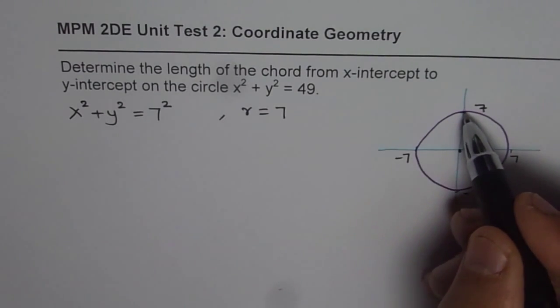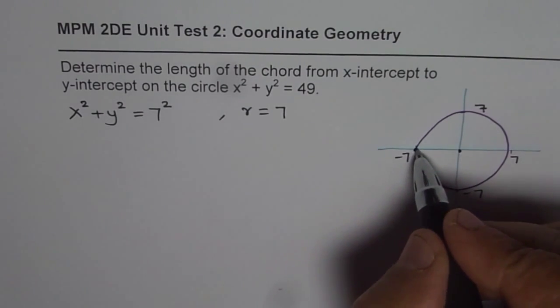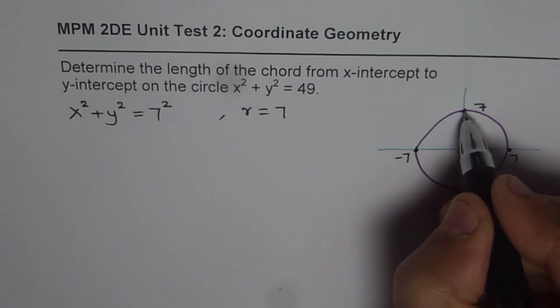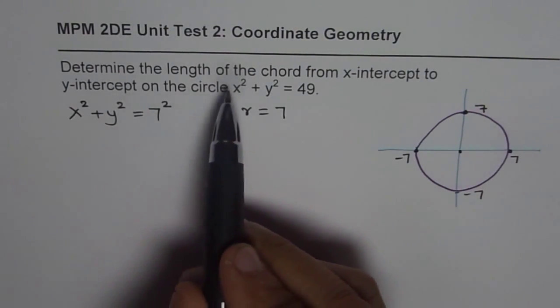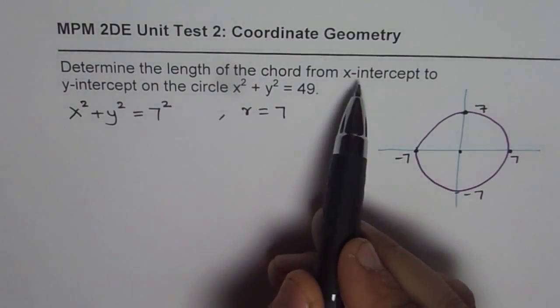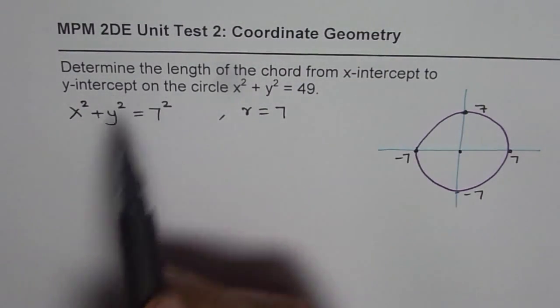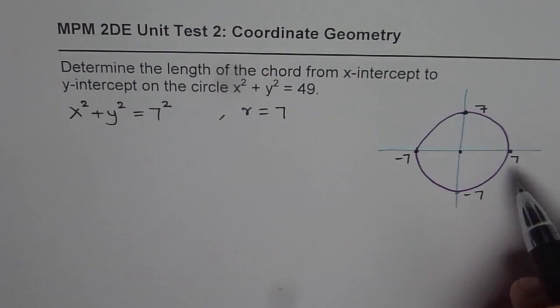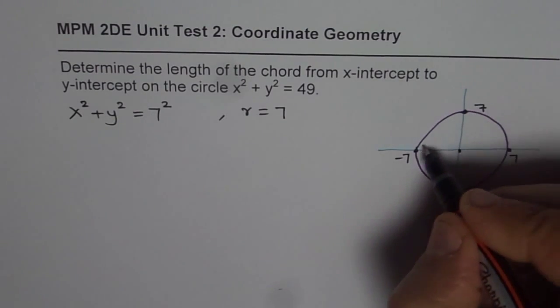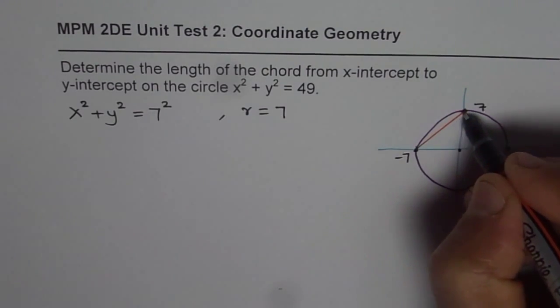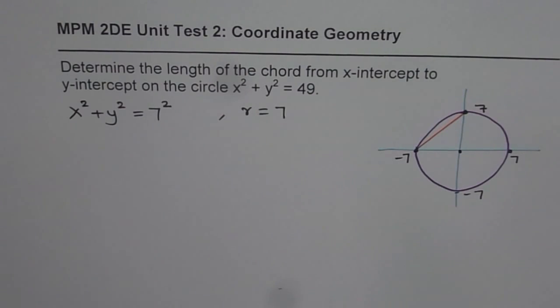So that is one way of finding x and y-intercepts. We know the x-intercepts and the y-intercepts. The question is determine the length of the chord from x-intercept to y-intercept. From the symmetry, we can select any two points. Let us do these two points. Let that be the length of the chord in which we are taking interest.